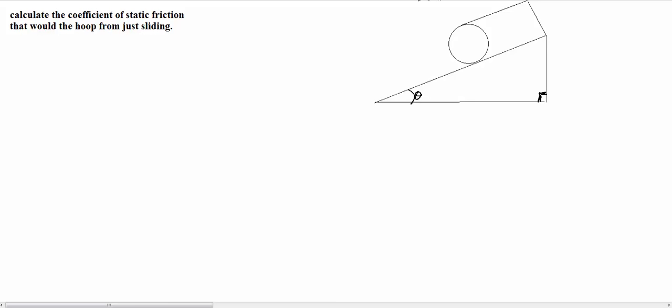We want to first start with our force diagram. So let's do that. We're going to do a vector that goes from the center of the hoop straight downward.